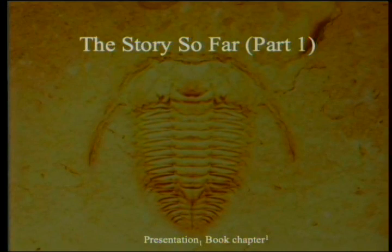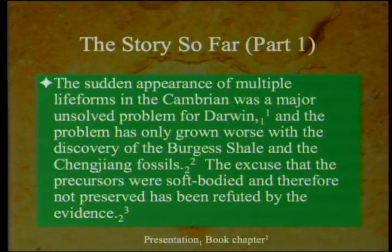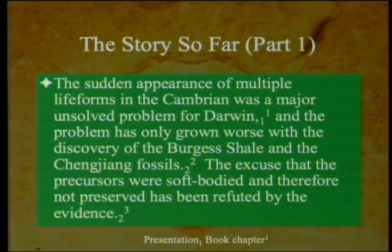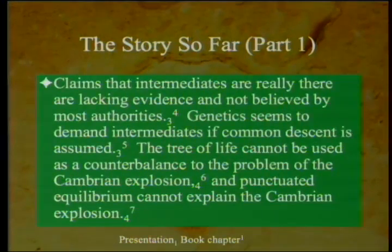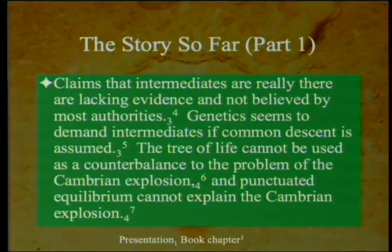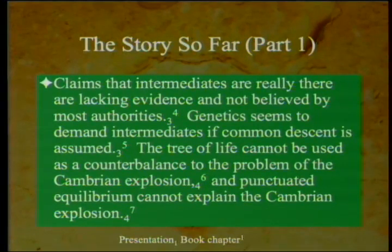I'm going to give you a quick synopsis of where the book has been so far. The sudden appearance of multiple lifeforms in the Cambrian was a major unsolved problem for Darwin, and the problem has only grown worse with the discovery of the Burgess Shale and the Changjing fossils. The excuse that precursors were soft-bodied and therefore not preserved has been refuted by the evidence. Claims that intermediates are really there are lacking evidence and not believed by most authorities. Some people use the Tree of Life to try to trump all this, but the Tree of Life has its own problems. Punctuated equilibrium does not explain the Cambrian Explosion either.